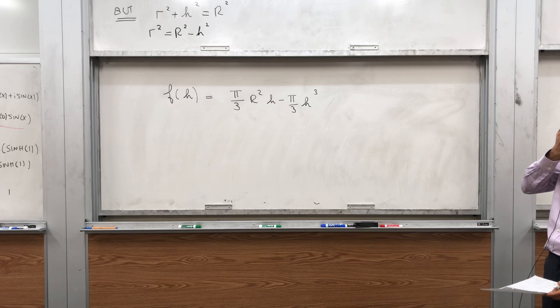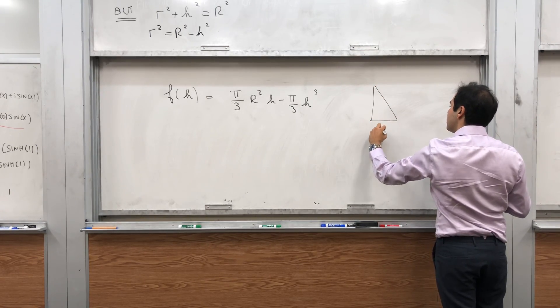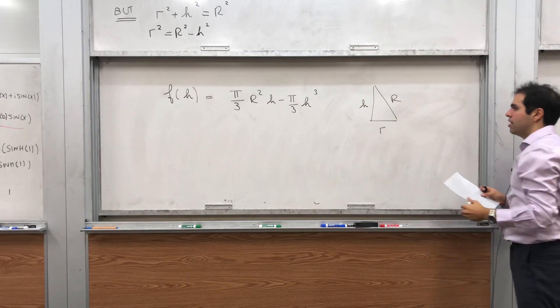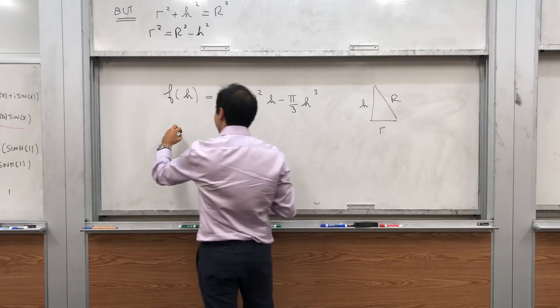And the question is, what are the bounds here? Essentially, look again at this picture. We have little r, we have big R, and we have h. Well, of course, h has to be a positive constant. Heights are positive.